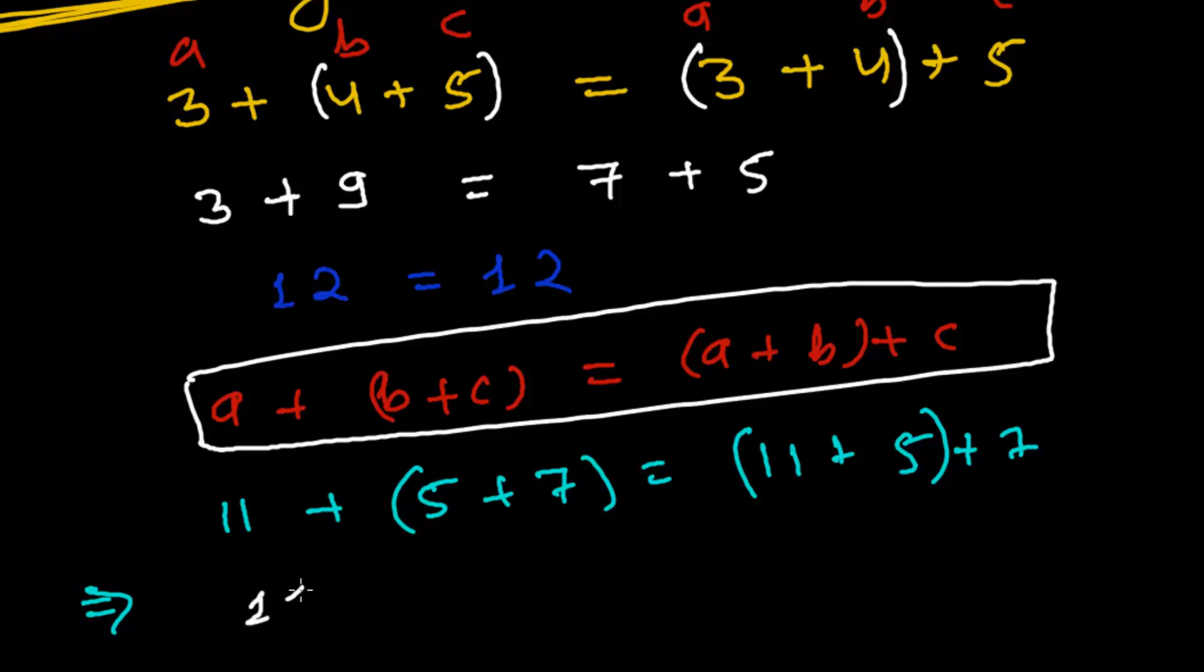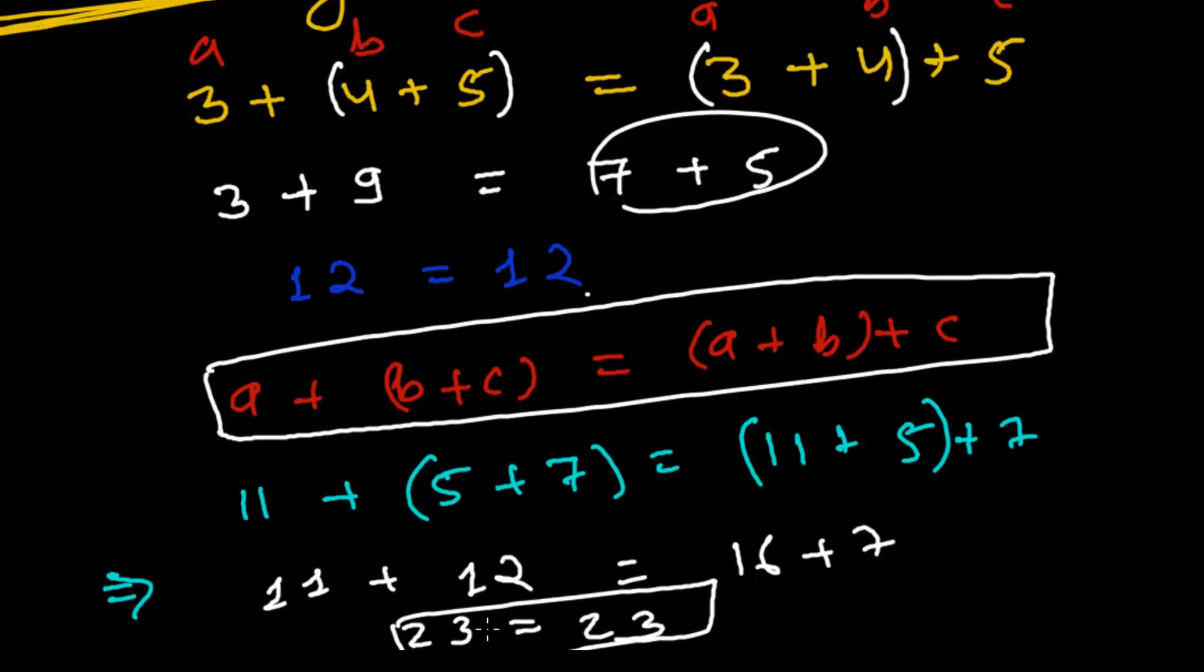All right, so 11, 5 plus 7, how much is that? 12, we just did somewhere. 5 plus 7, yeah, 12. And 11 plus 5, that is 16 plus 7. 11 plus 12. 11 times 2, that is 22 plus 1, that is 23. And 16 plus 7, 6 times 2, 12, and one more extra, 23. This is absolutely correct.